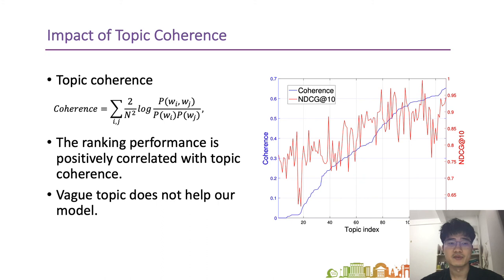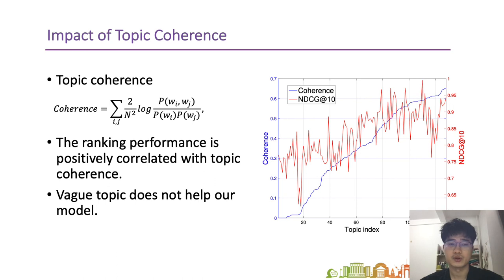Since we use additional topic information, we study the impact of topic quality. Topic coherence is a metric to measure topic quality. We split queries according to the assigned topic with maximum probability. The blue line shows the topic coherence of each topic, and the red line shows query performance in NDCG@10. We find that ranking performance is generally positively correlated with topic coherence, showing that topic quality affects ranking performance in our model. For topics with lower quality, they cannot help our model to retrieve better documents.